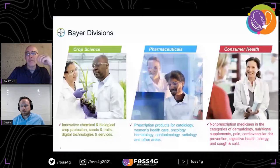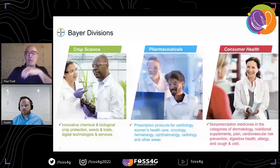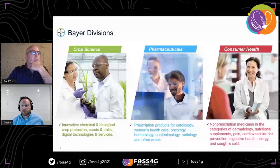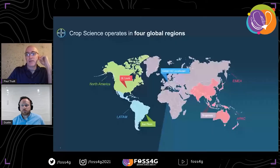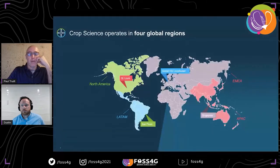Day to day we're independent. We do periodically cross over and work with the other groups, but it's not the norm. The company itself has a presence in 83 countries around the world. Bayer Crop Science is organized into four global regions. I work out of the St. Louis headquarters for North America, but we work with all four regions every day in our job with Location 360.